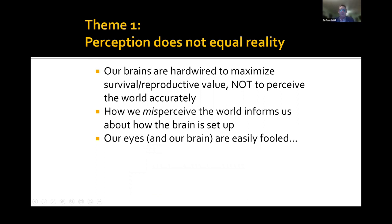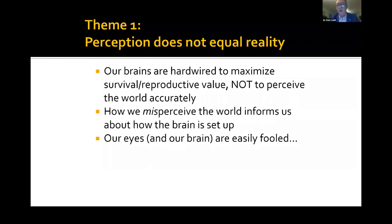Our brains are hardwired to maximize survival and reproductive value, not to perceive the world accurately. But what's interesting is that how we misperceive the world tells us how the brain is set up. We can put people in experiments in situations we know they'll fail to show how our brain is hardwired, and then generalize that to the real world to understand which situations lead to more misperception and which lead to greater or lesser accuracy.